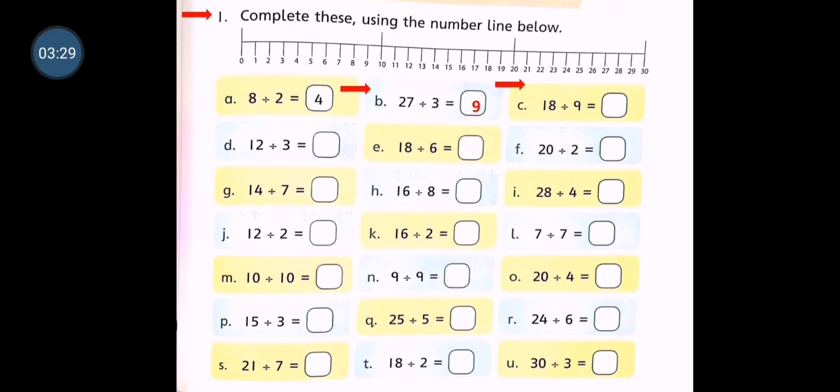Okay, now read the table of 9 with me. 9 ones are 9, 9 twos are, yes, 9 twos are 18. 2 times 9 is 18, so the answer is 2. 9 twos are 18.